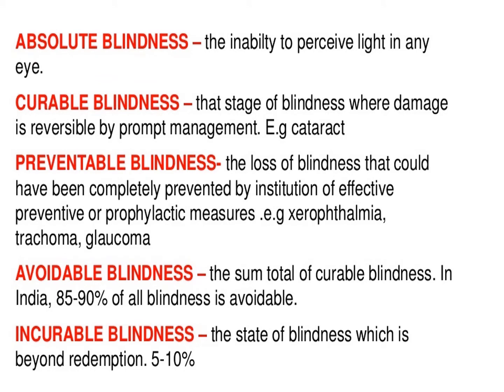Absolute Blindness: there is inability to perceive light in any eye. Curable Blindness: that stage of blindness where damage is reversible by prompt management. Example: cataract.